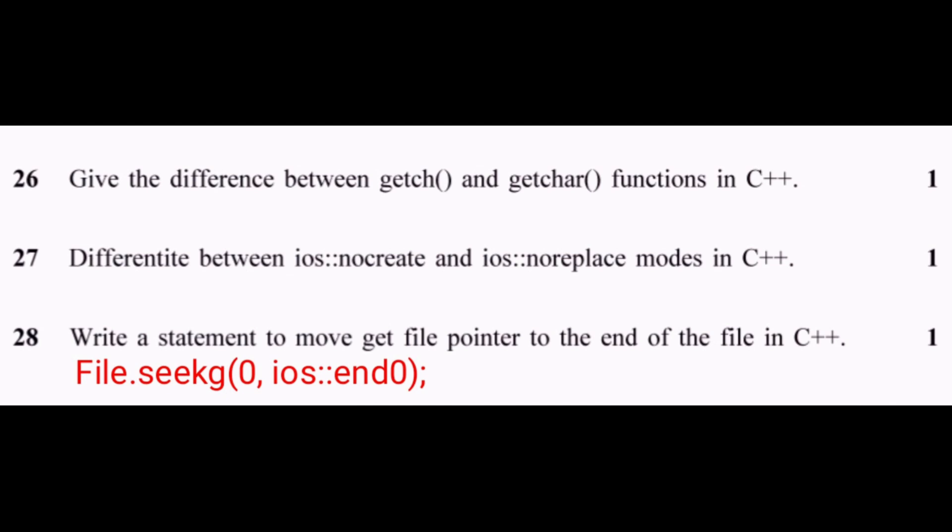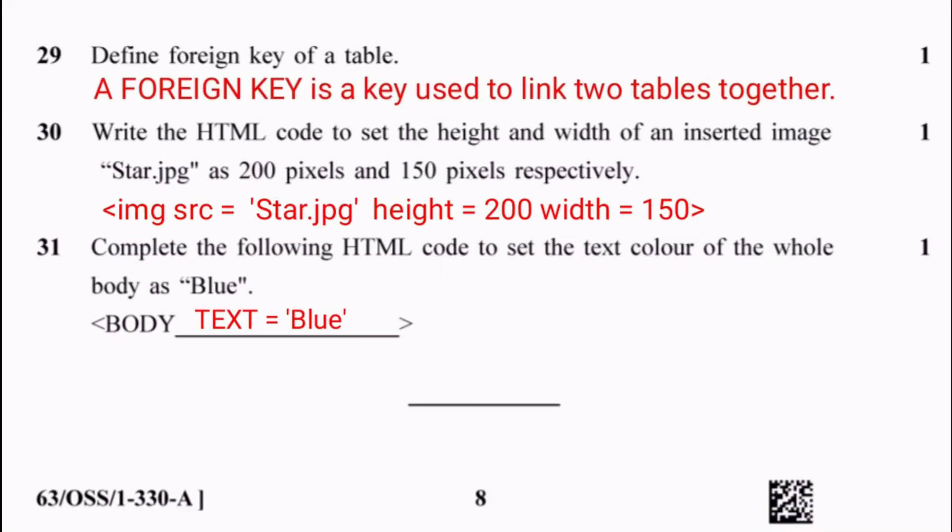Question 29: Define foreign key of a table. A foreign key is a key used to link two tables together. Question 30: Write HTML code to set the height and width of an inserted image star.jpg as 200 pixels and 150 pixels respectively: <img src="star.jpg" height=200 width=150>. Question 31: Complete the HTML code to set the text color of the whole body as blue: <body text=blue>.